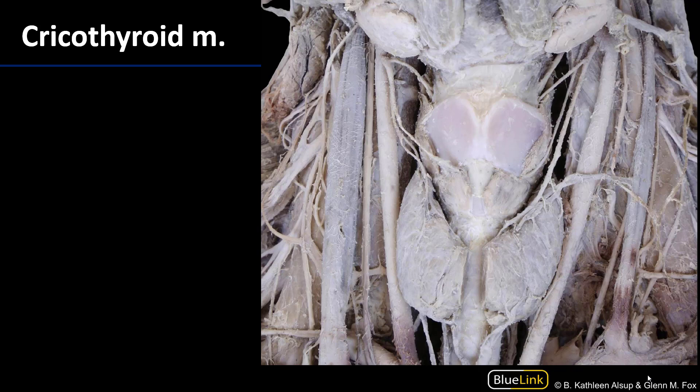Most of them are innervated by the recurrent laryngeal nerves. The exception to that is this first muscle that we'll start with, the cricothyroid. Pay attention to the names of the intrinsic laryngeal muscles because a lot is revealed — in particular, what elements of the laryngoskeleton these muscles attach. The cricothyroid muscles run from the anterior aspect of the cricoid cartilage up to the thyroid cartilage.